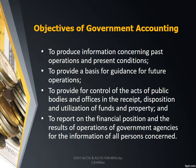As provided in Section 110 of Presidential Decree 1445, the following are the objectives of government accounting. First, to produce information concerning past operations and present conditions. Second, to provide a basis for guidance for future operations. Third, to provide control of the acts of public bodies and offices in the receipt, disposition, and utilization of funds and property. And last, to report on the financial position and the results of operations of government agencies for the information of all persons concerned.